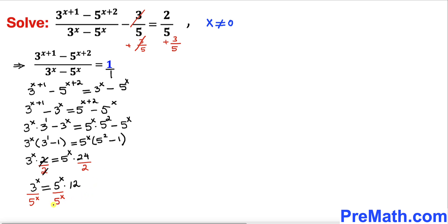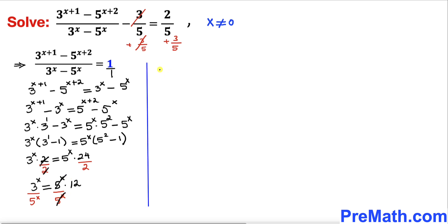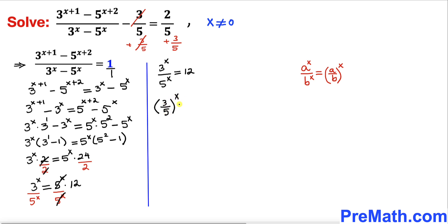Now let's divide both sides by 5^x. The 5^x on the right cancels, leaving us with 3^x / 5^x = 12. The left hand side can be written as (3/5)^x = 12 using the basic exponent rule.